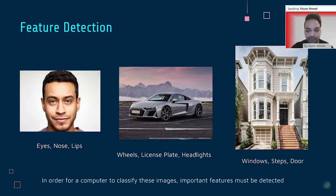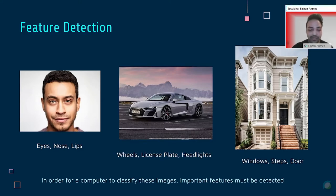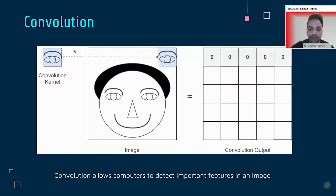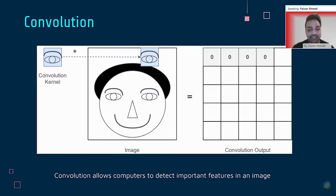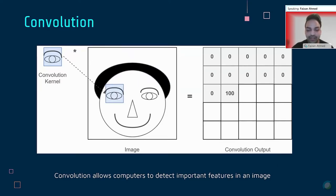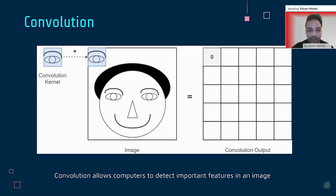In order for a computer to classify images, it has to detect key features. For a person, key features would include the eyes, nose, and lips. For a car, it would be the wheels, license plate, and headlights. For a house, it would be the windows, steps, and door. If a computer detects eyes, nose, and lips, it would know with high probability that the image is of a face. Feature detection in computer vision is carried out through a linear algebra operation called convolution, which is essential to understand for the rest of this presentation — this is really how neural networks and deep learning work.